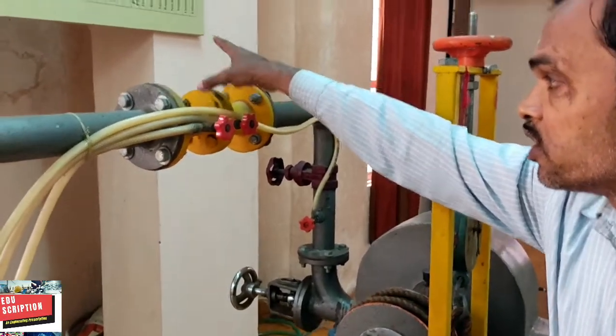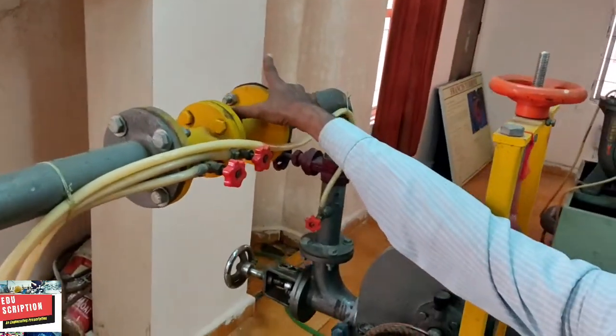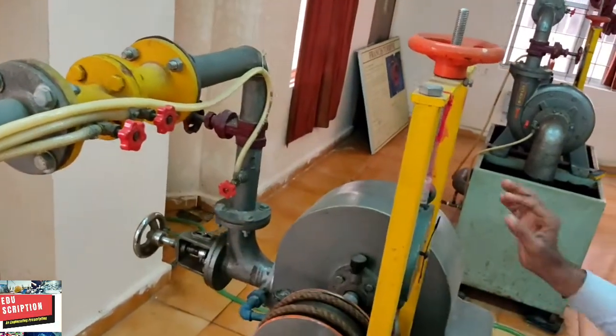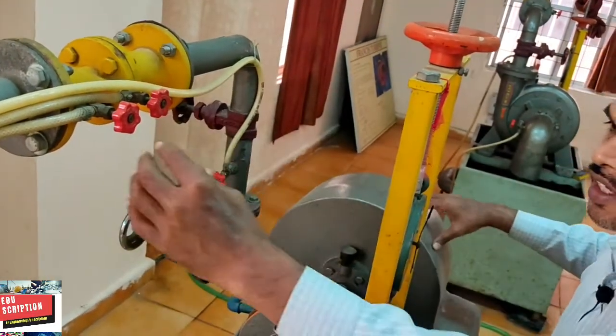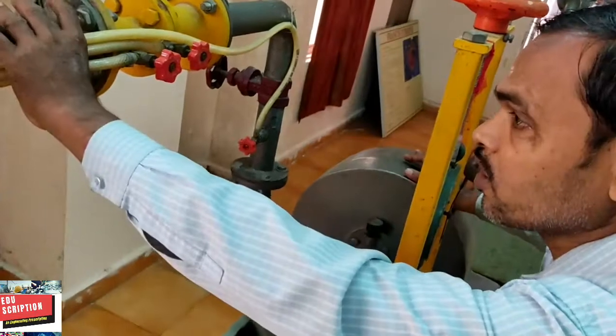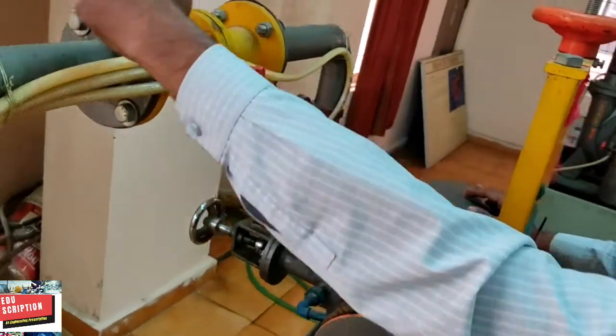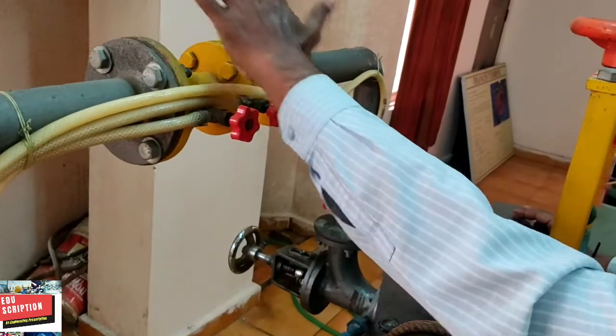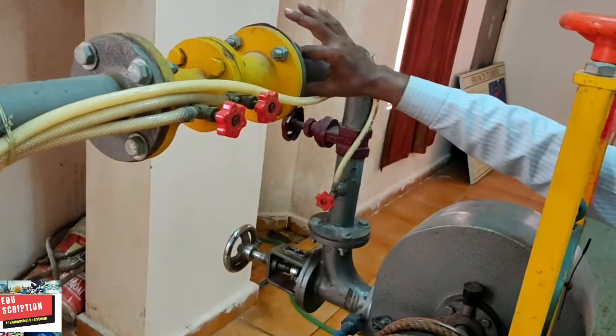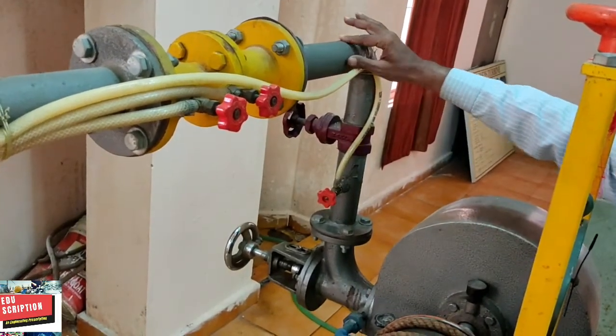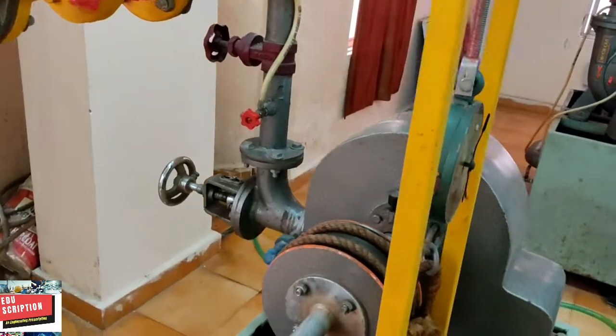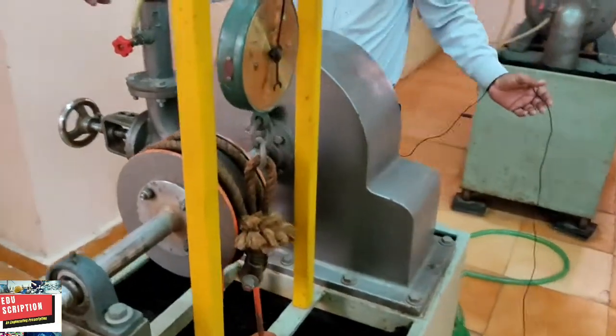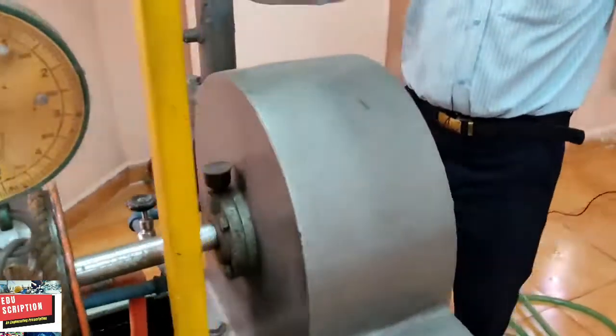This part is your venturimeter. About the different parts of the venturimeter: this part is the converging throat diverging part. When the water flows through this, it is with high pressure. Then when it passes through the venturimeter, the venturimeter maintains a constant pressure. After that, another opening and closing valve is also here.